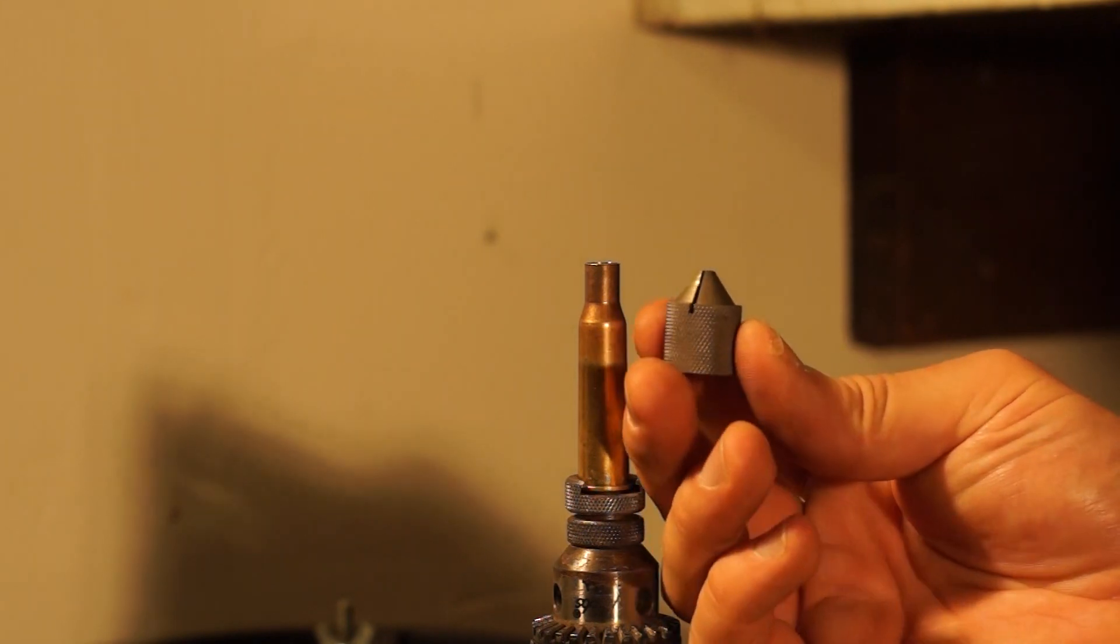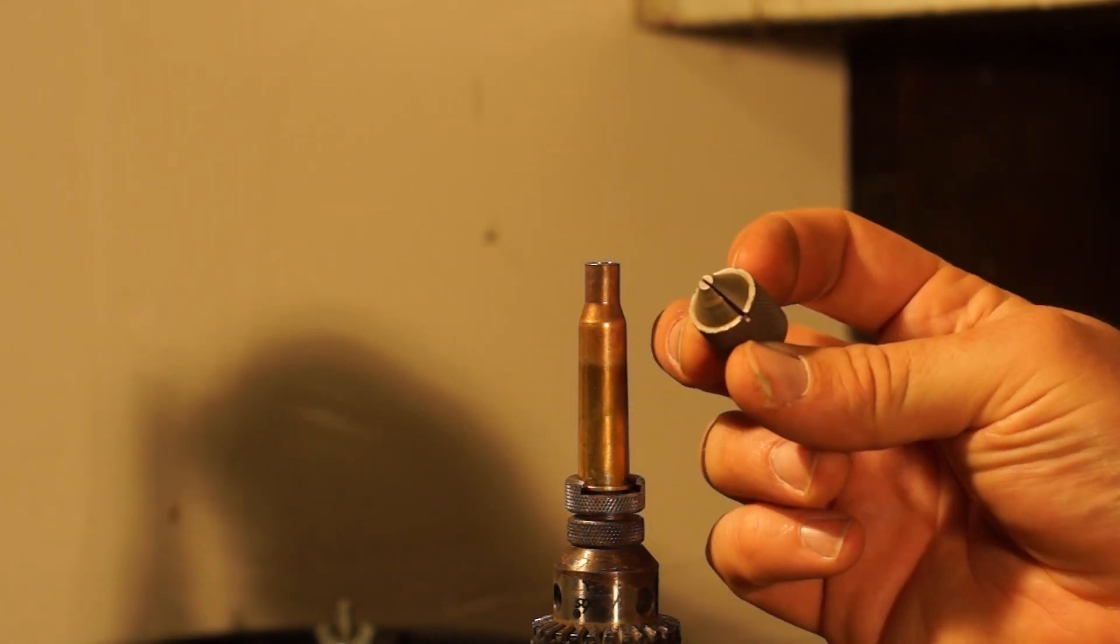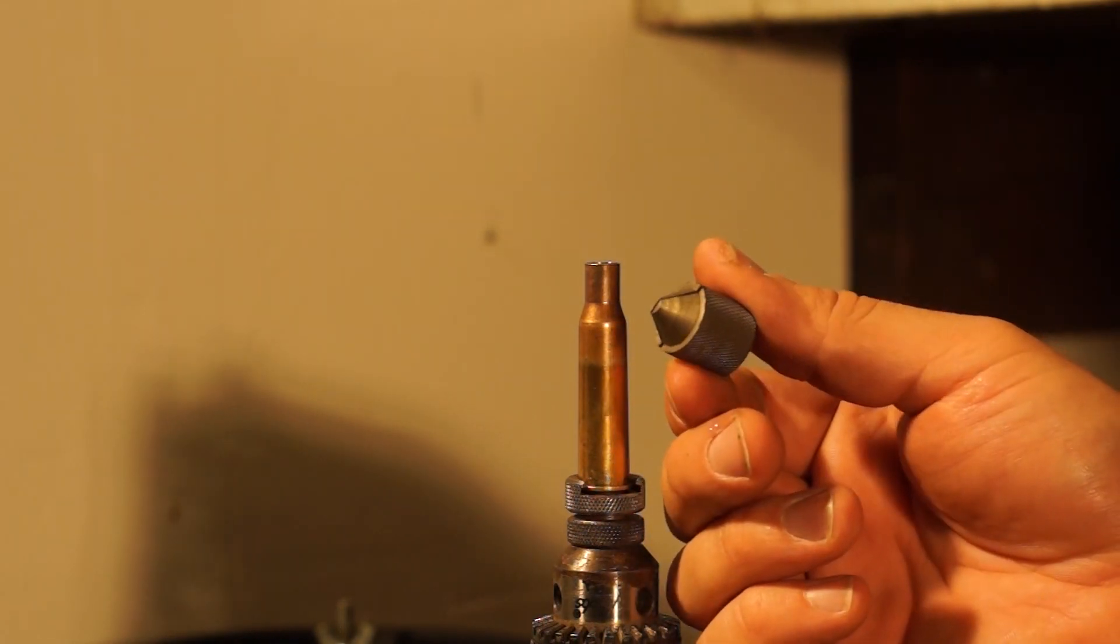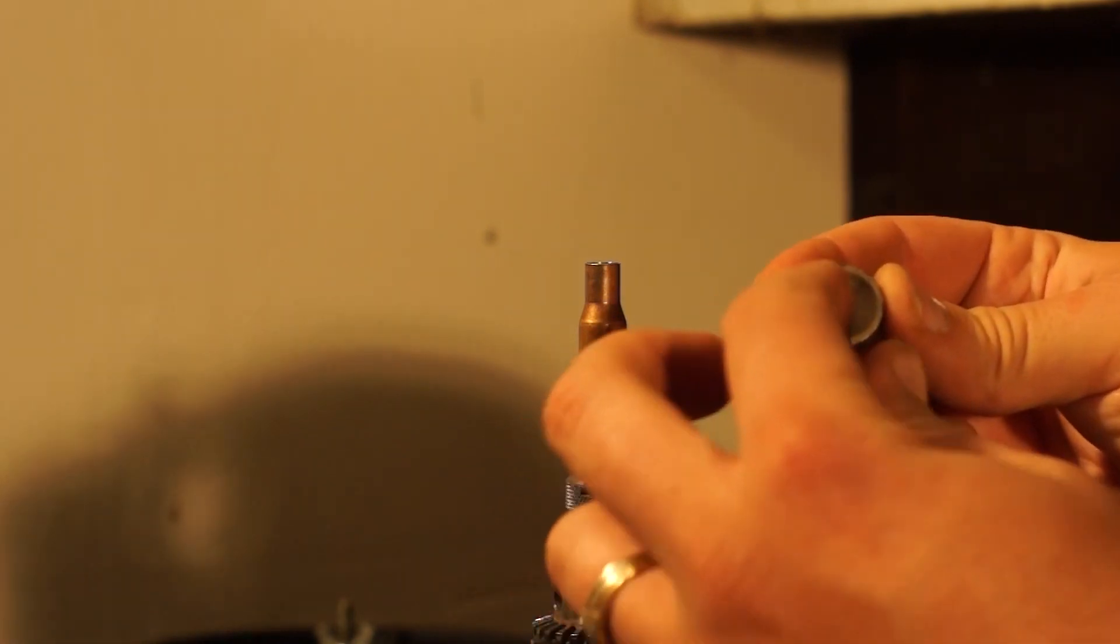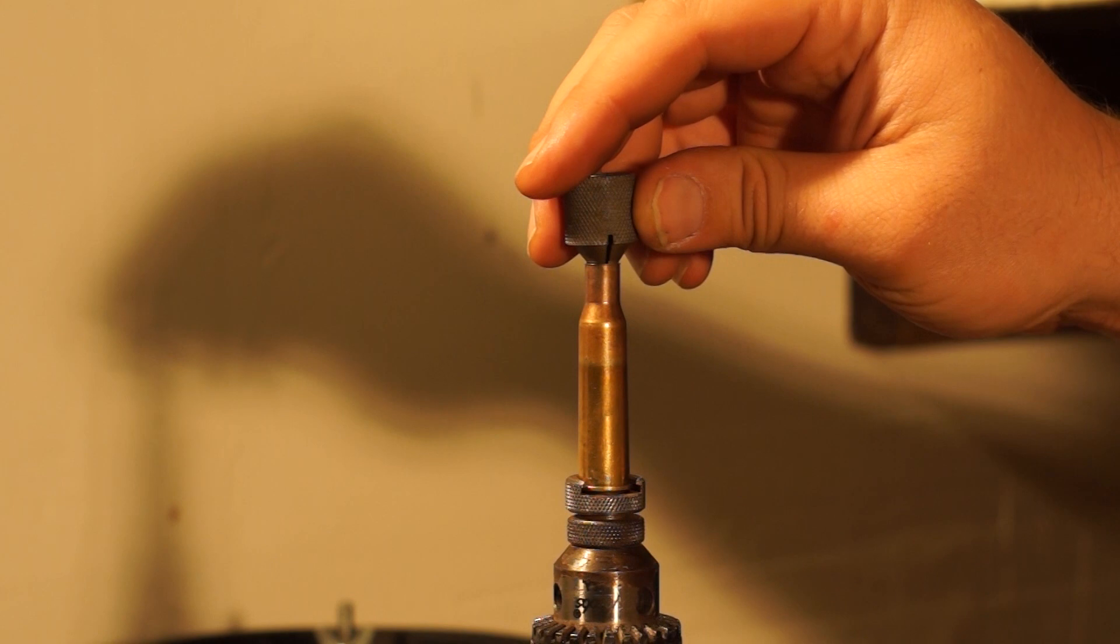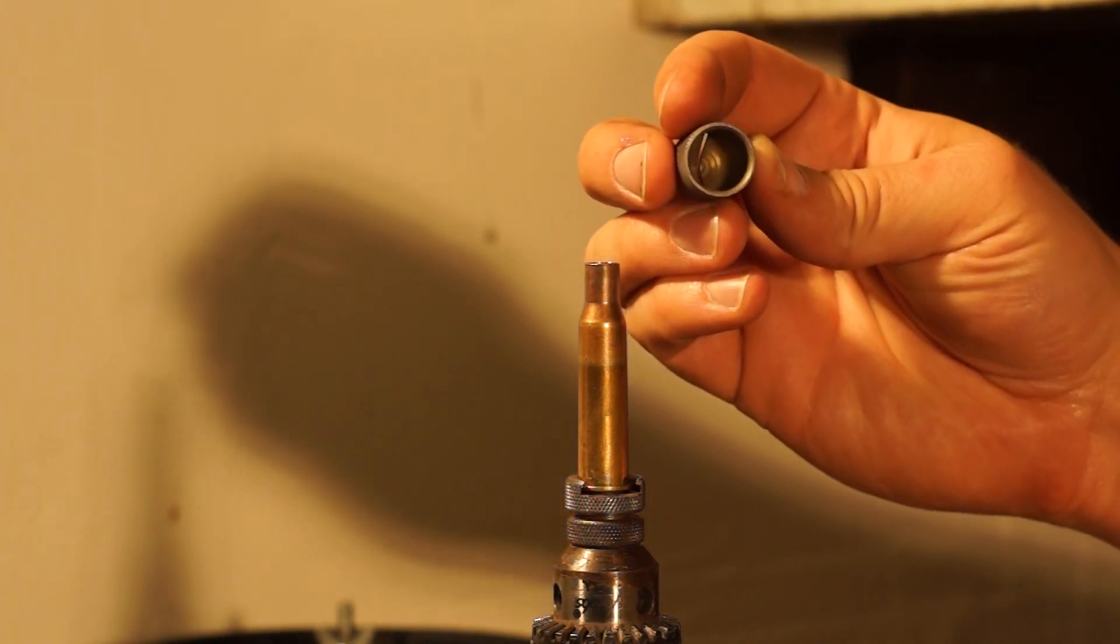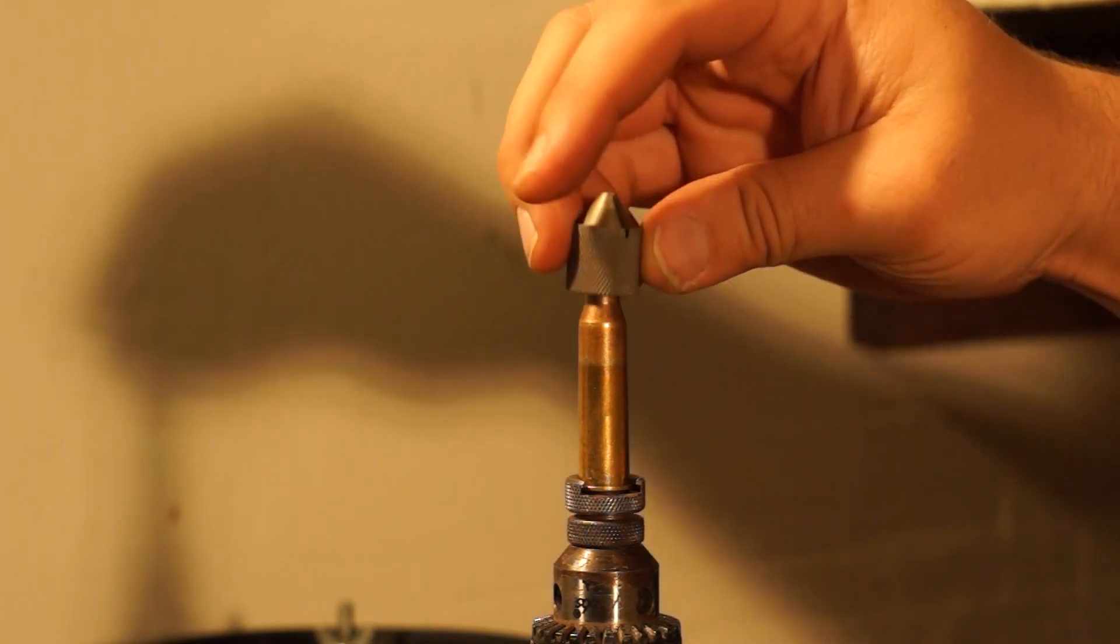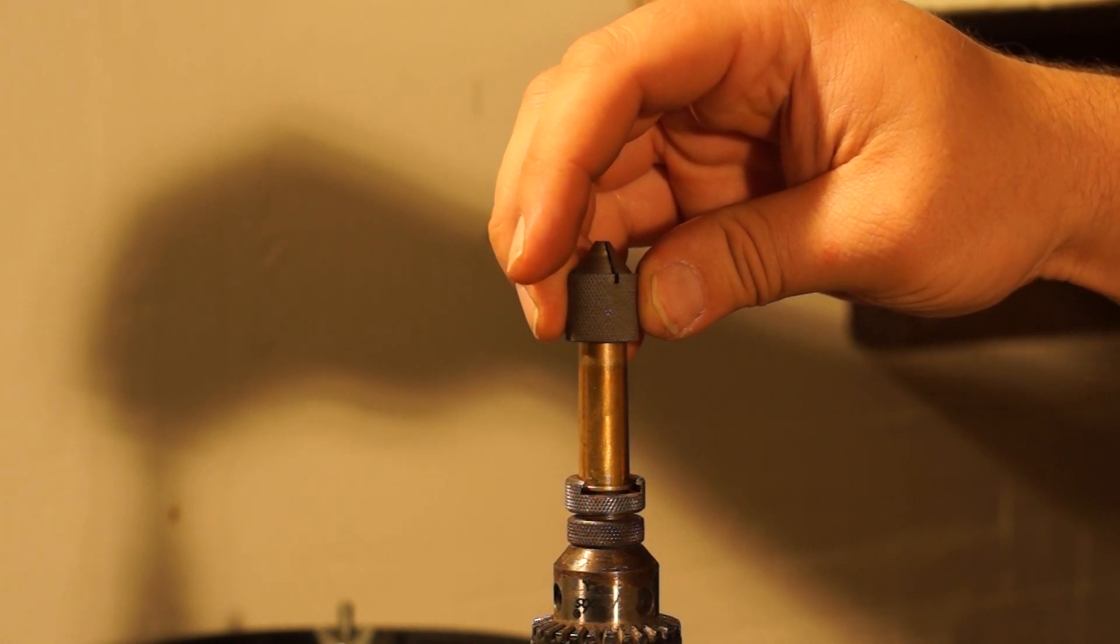So Lee's way of chamfering and deburring is this one tool. You use the outside of this tool for chamfering the inside of the neck. And you use the inside of the tool for deburring the outside of the neck.